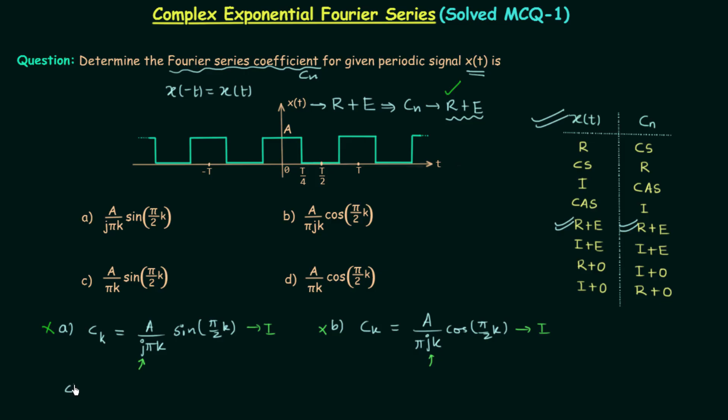Now we will move to option C. Option C is having the coefficient equal to A over pi*K. No j this time, sin(pi/2*K). So this time the coefficient is real. So the first condition is satisfied. Now we are required to check whether it is even or not.